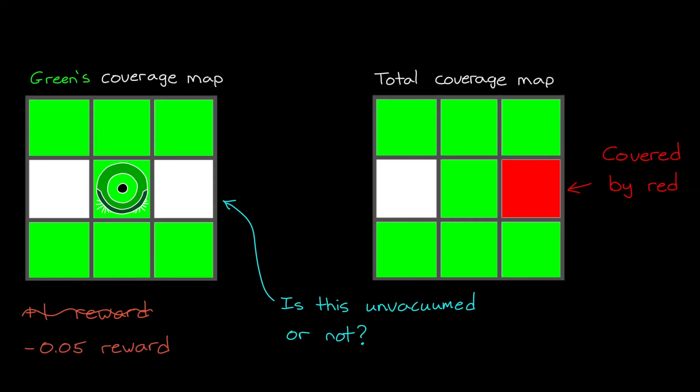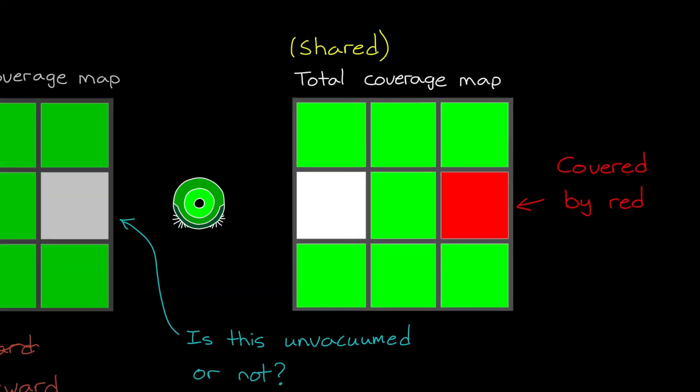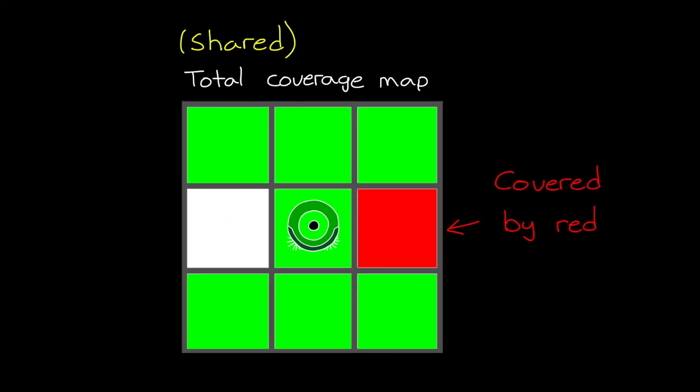Now, one possible solution is to have each of the vacuums just share their coverage map with each other. That way, they will have enough information to ultimately learn to move into locations that haven't been covered by any of the vacuums. And again, this requires additional hardware or software that allows for this information sharing. So, there is a trade-off that needs to be considered between performance and overall complexity of your project. So, sharing the coverage map is definitely a better approach for this example than just having each vacuum work completely independently from each other.